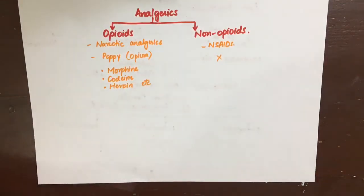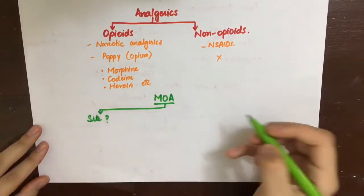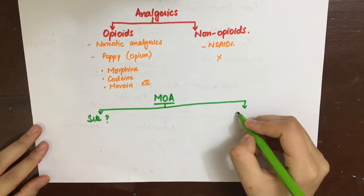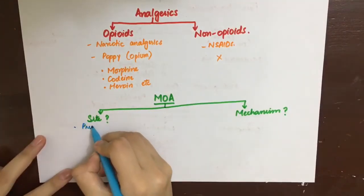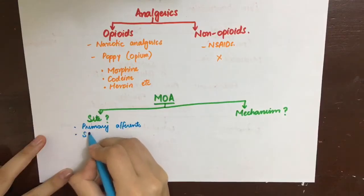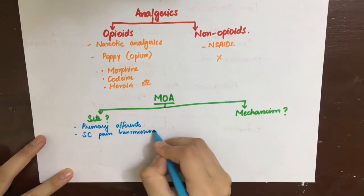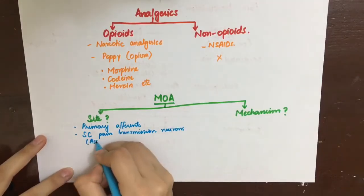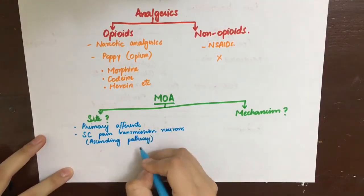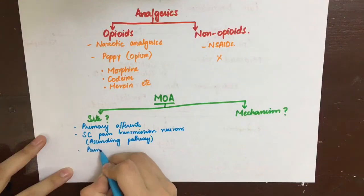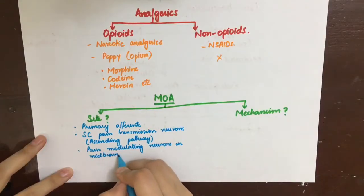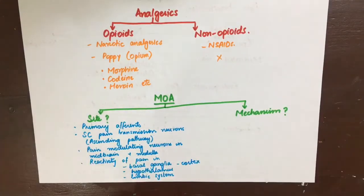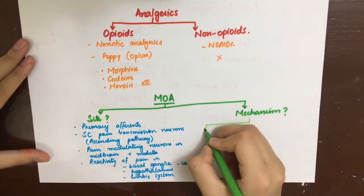To discuss the mechanism of action of opioid analgesics, we'll look at their site of action and the mechanism by which they act. Their site of action includes the primary afferent pathways, the spinal cord pain transmission neurons (ascending pathway), the pain-modulating neurons in the midbrain and medulla, and they can also modulate the reactivity of pain in the basal ganglia, hypothalamus, limbic system, and cerebral cortex.